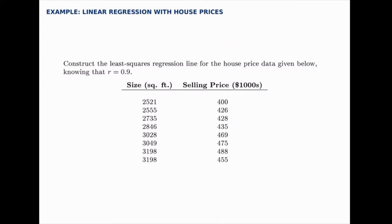We're told ahead of time that the correlation coefficient r is 0.9. Later on we'll use the calculator to calculate that, but for now this one's given to us and we're going to use the formulas to calculate the regression line, the formulas for a and b.